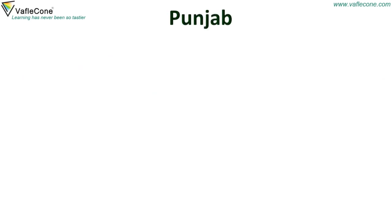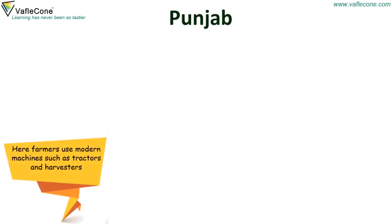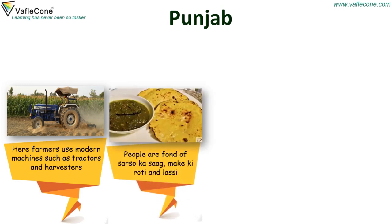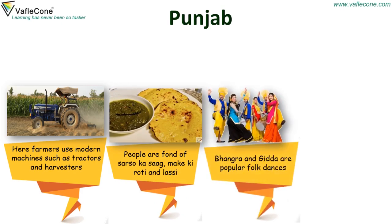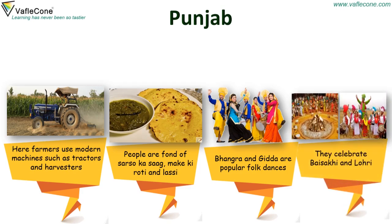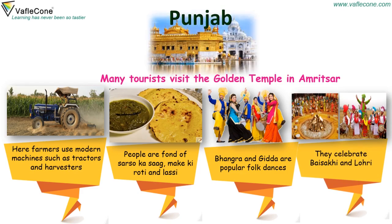Punjab: Farmers use modern machines such as tractors and harvesters. People are fond of Sarsoka Saag, Makki Ki Roti, and Lassi. Bhangra and Giddha are popular folk dances. They celebrate Baisakhi and Lahuri. Many tourists visit the Golden Temple in Amritsar.